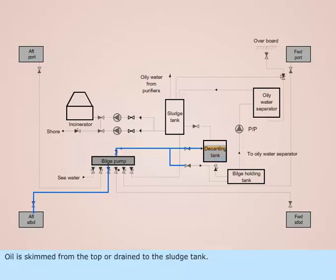Oil is skimmed from the top or drained to the sludge tank. The water is drained to the bilge holding tank.